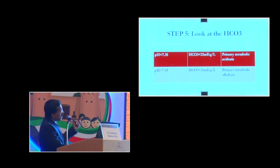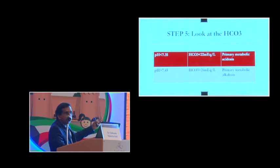Now, look at the bicarbonate. If your bicarbonate is less than 22 and if your pH is less than 7.35, it is primary metabolic acidosis. If your bicarbonate is more than 26 and if your pH is more than 7.45, it is primary metabolic alkalosis.